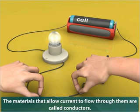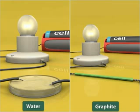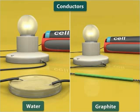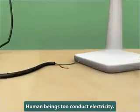Certain non-metals like water and graphite (that is, pencil lead) however are conductors. Human beings too conduct electricity as they have a large amount of water in their body. That is why we get an electric shock if we accidentally touch a live wire.